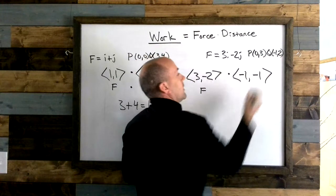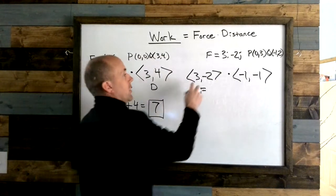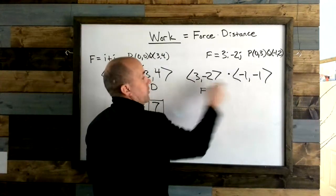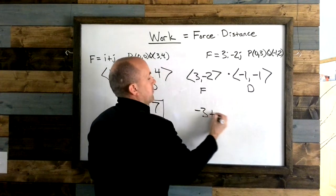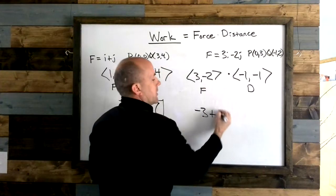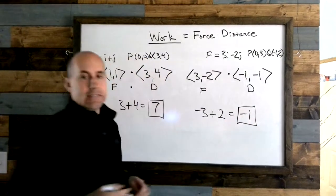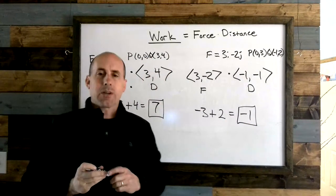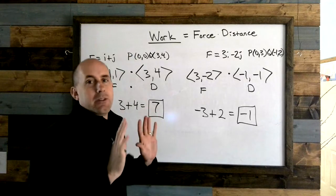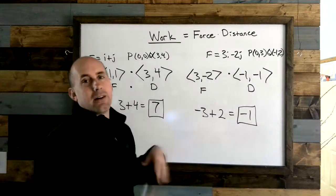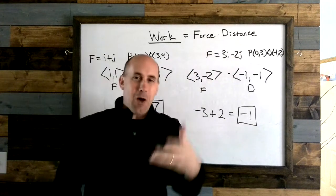It actually moved back on the individual. So we multiply this out. This is my distance vector. Three times negative one is negative three, plus negative two times negative one is two, to say negative one units of work got done. How can negative work be accomplished? Say that your job is to roll a stone up a hill and the stone is actually rolling back on you. That would be negative work being accomplished on your part.